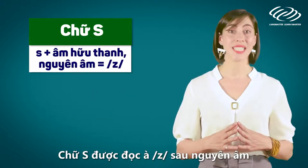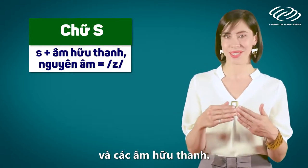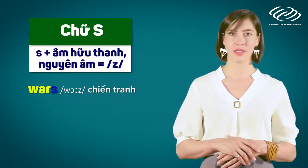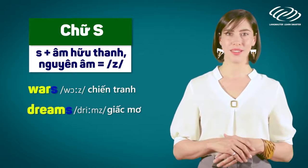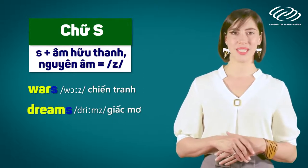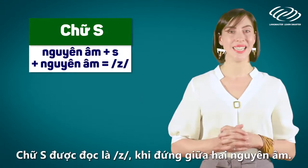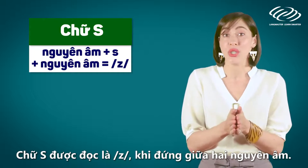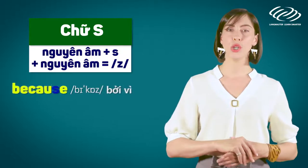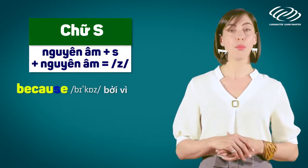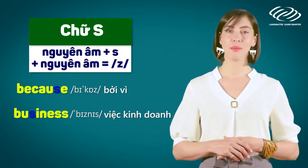The letter S is pronounced as /z/ after vowels and voiced sounds. For example: wars, dreams. The letter S is also pronounced as /z/ when it comes between two vowels — for example: because, business.